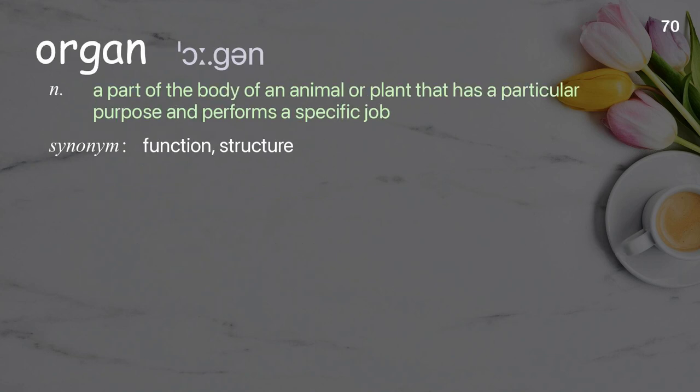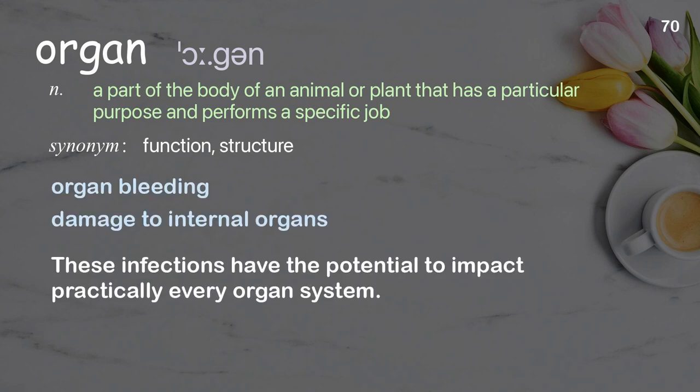Organ: a part of the body of an animal or plant that has a particular purpose and performs a specific job. Examples: organ bleeding, damage to internal organs. These infections have the potential to impact practically every organ system.